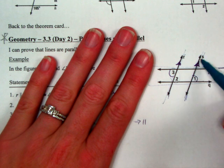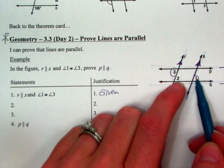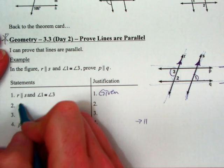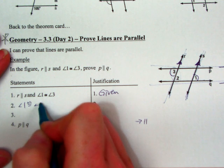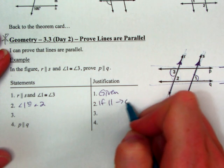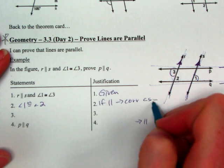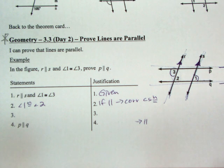So these two lines are parallel. I can talk about 1 and 2 being equal because they are corresponding. So if parallel lines, then corresponding angles equal. Now I can mark that.